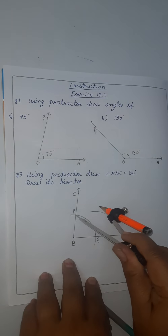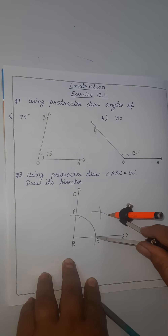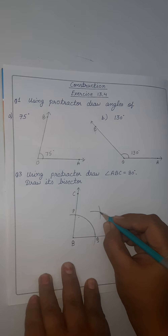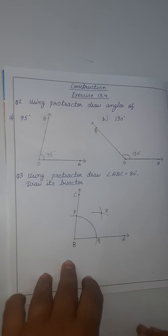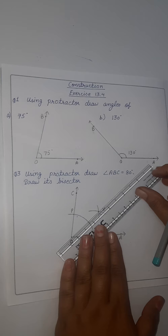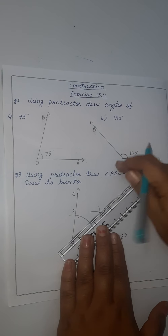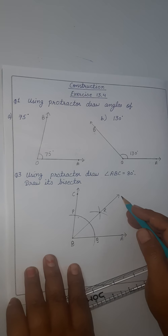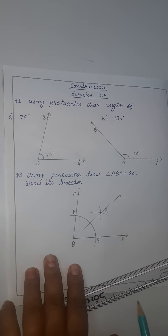With the same radius, we cut one arc with center P and one with center Q. Both arcs are intersecting each other at a point — name this point as point R. Finally, we have to join B to R. This is the angle bisector BR, because it divides the angle into two equal parts.